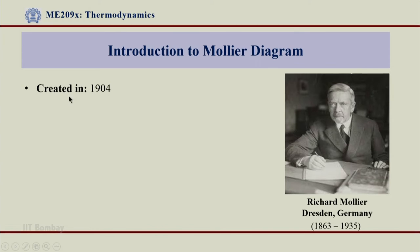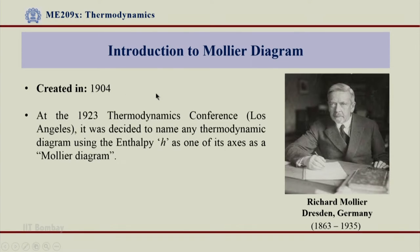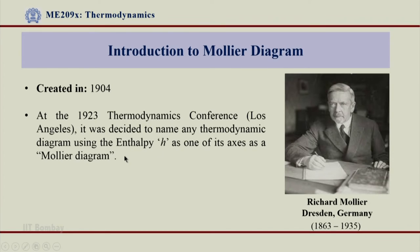These charts were created in 1904. Just as a historical fact, at the 1923 thermodynamics conference in Los Angeles, it was decided to name any thermodynamic diagram using enthalpy H as one of its axes as a Mollier diagram. So whenever you have a graphical representation in which one of the axes is enthalpy H, one can refer to it as a Mollier diagram. This nomenclature is not so prevalent in practice, but it is still a fact which we should all remember.